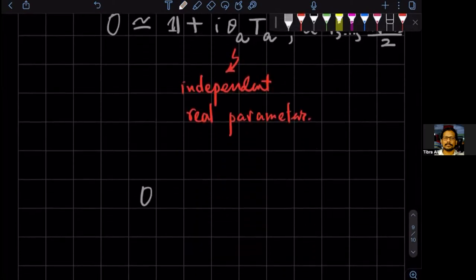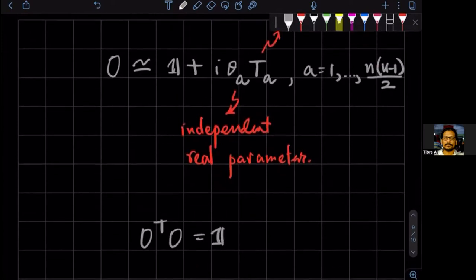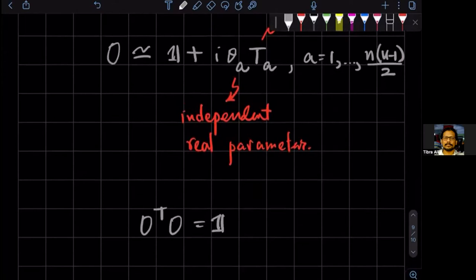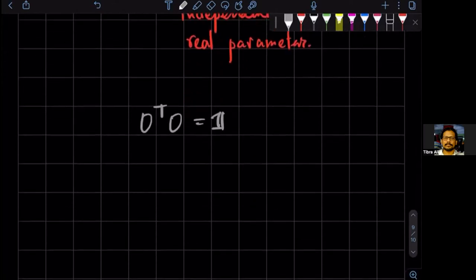Now, the fact that O transpose O is equal to 1, if we expand this to order theta, we get that T A transpose is minus T A. In other words, T A is an antisymmetric matrix.